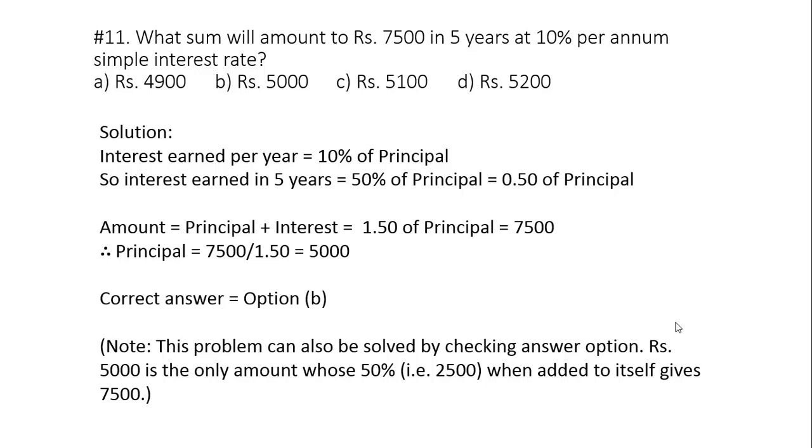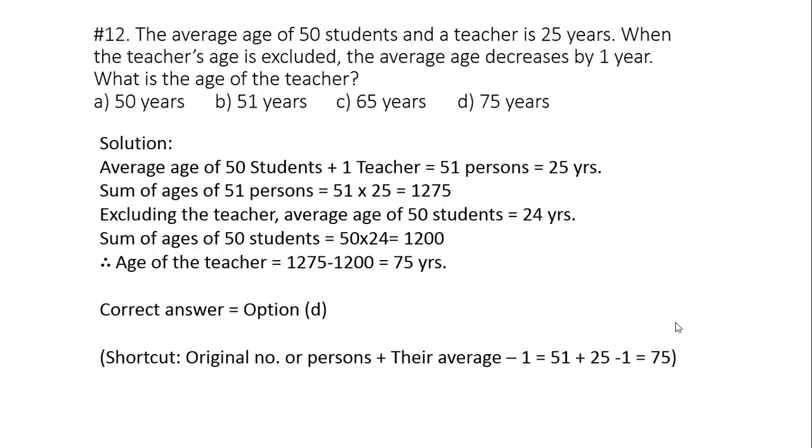Now last question of part one, question number 12. The average age of 50 students and a teacher is 25 years. When the teacher's age is excluded, the average age decreases by one year. What is the age of the teacher? The question says that in the beginning there were 50 students and a teacher whose average age was 25 years. Then the teacher's age was excluded and the average age decreases by one year. It means the new average becomes 24 years. So what is the age of the teacher? We'll see two methods.